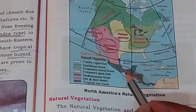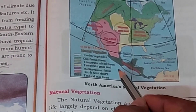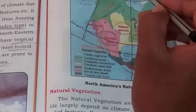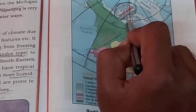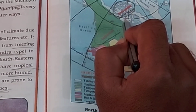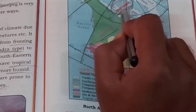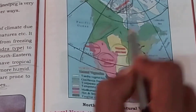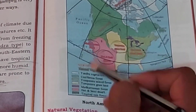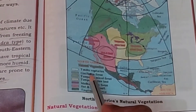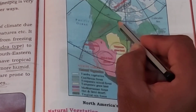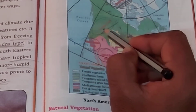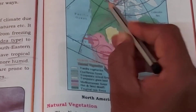The entire vegetation is broadly divided into 7 types. The colour on the map represents tundra vegetation. Next, below that, we can see this green colour, which is coniferous forest.